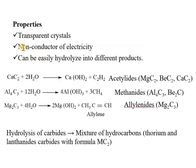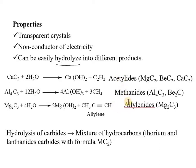Looking at the properties of ionic or salt-like carbides, you will find that they are transparent crystals. They are non-conductors of electricity. A main property is that they can easily hydrolyze into different products — the hydrolysis reaction is a key characteristic of salt-like carbides.